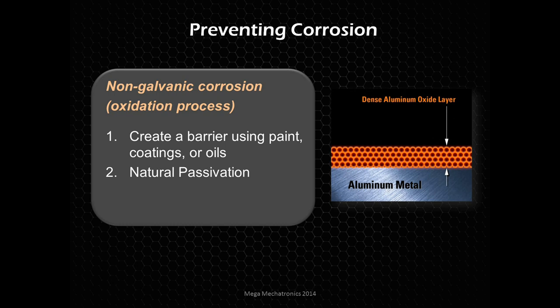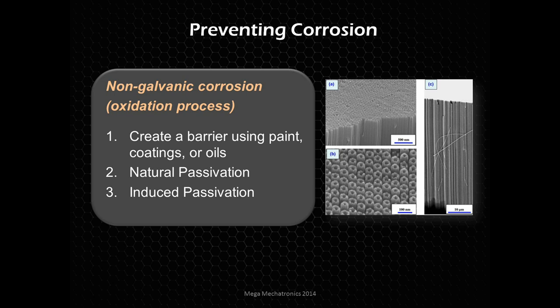There is also natural passivation, and this is why aluminum is a great material — it creates a very dense aluminum oxide layer that acts like a coating and prevents moisture and oxygen from attacking it. That's why it's used a lot in water, building docks, and things like that. You can actually induce passivation through anodization: using electricity in an electrolyte, columns grow down into the material, creating a porous layer they fill with coloring. That's why Apple uses it on their products — it's a very durable color coating.